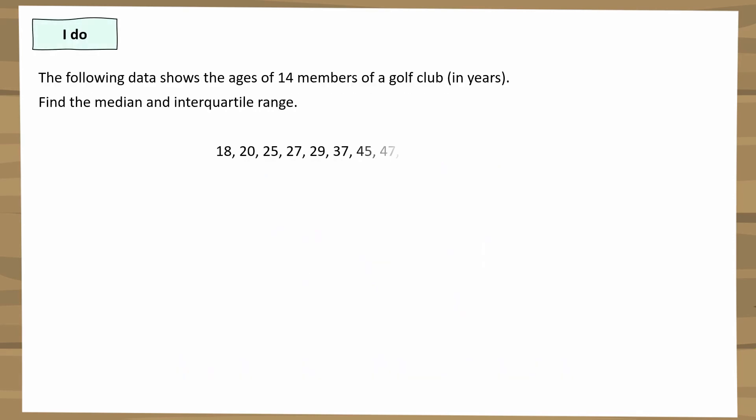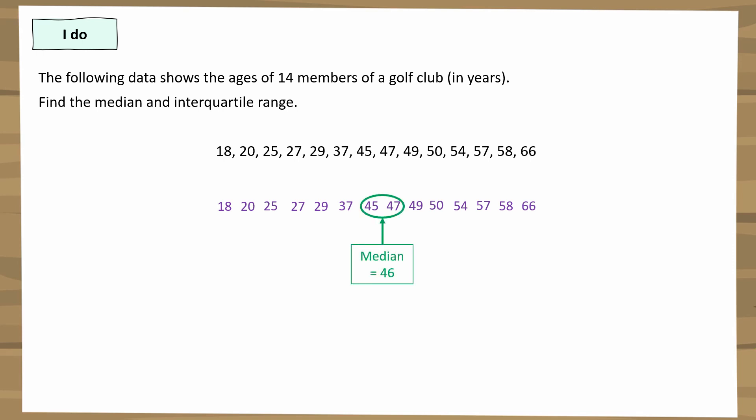Now one more example — the following data shows the ages of 14 members of a golf club in years. Find the median and the interquartile range. This question is different because there are an even number of data values — 14 — so the median falls between two values. I'll rewrite them out to show working. The median lies between 45 and 47, and we find the middle of those two, which is 46.